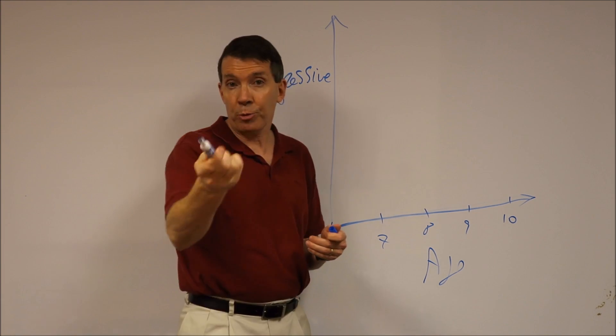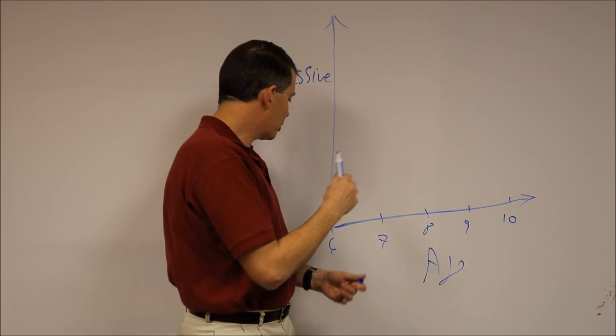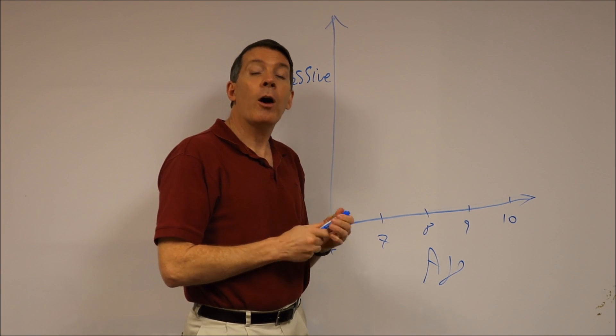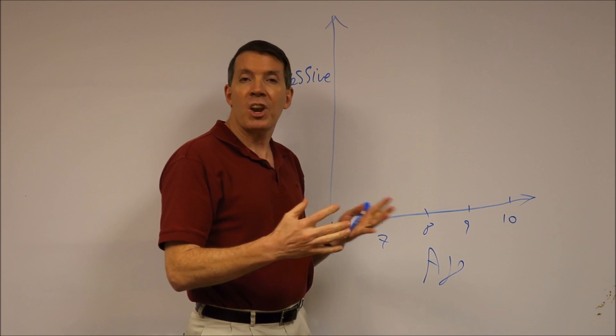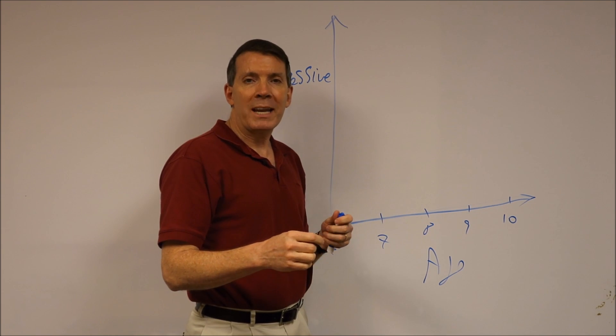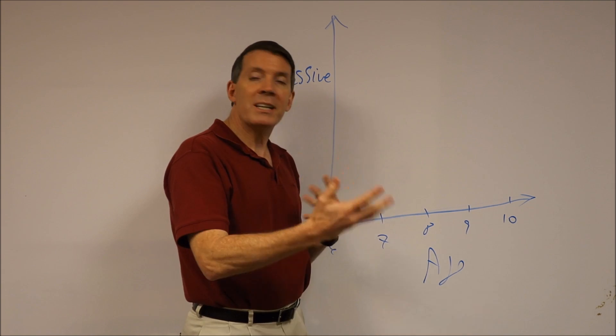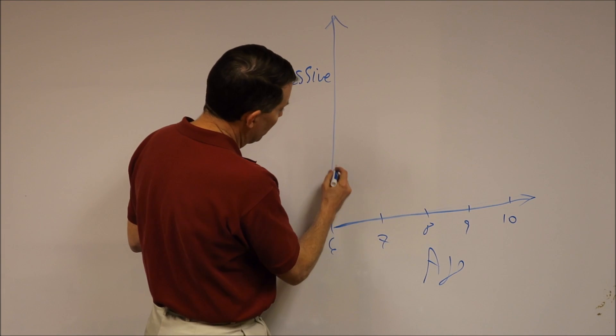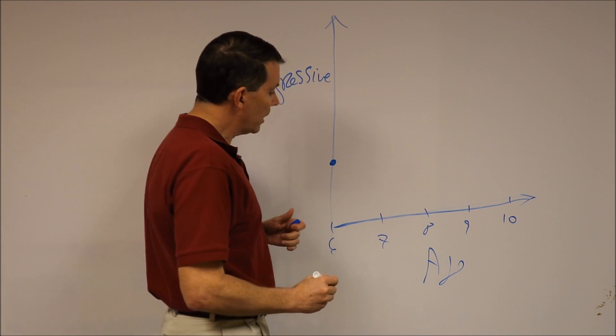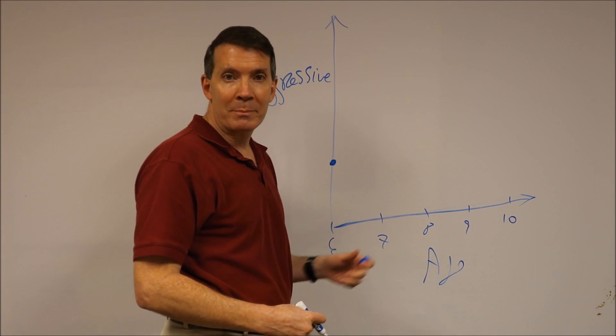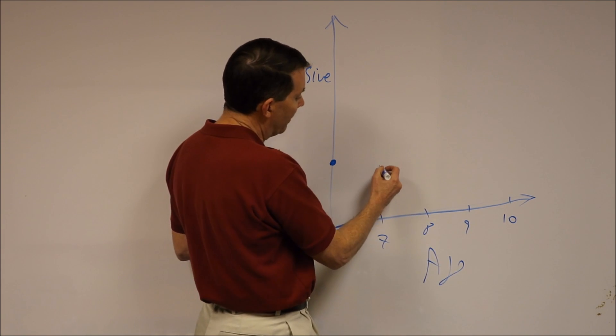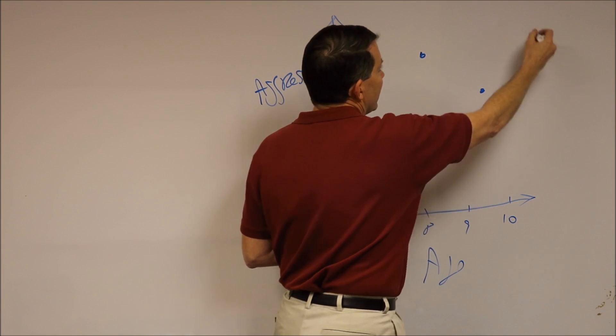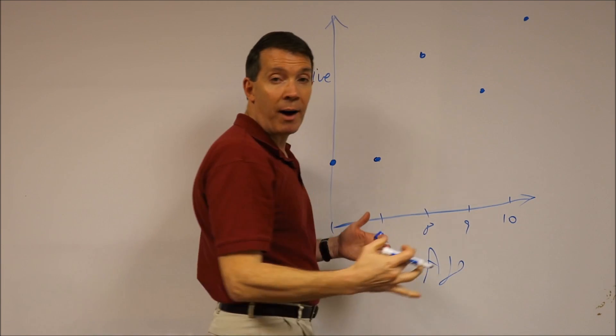So this is age on the x-axis, and on the y-axis we have some measure of aggressive behavior. So say that you're the researcher, you go into my house, I'm 6 years old, you sit down with my mom, and you say, let's think about little Patrick and the prior 90 days, and please tell me how many times he endorsed or exhibited each of these aggressive behaviors. And so my mom fills it out, and we get some measure here. Then we wait a year, you go back into the home, I'm now 7, you ask mom again, and maybe it's here, and then maybe here is 8, and here is 9, and here is 10. So we have five repeated measures.